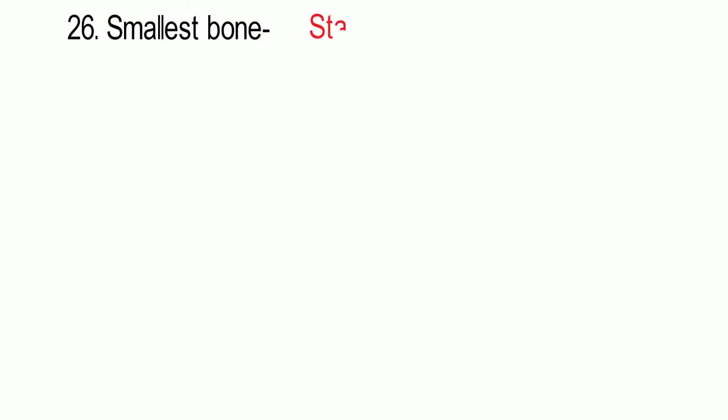The smallest bones in the human body are found in our ear — they are the malleus, incus, and stapes.